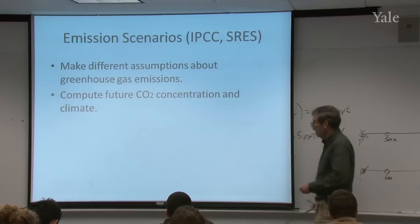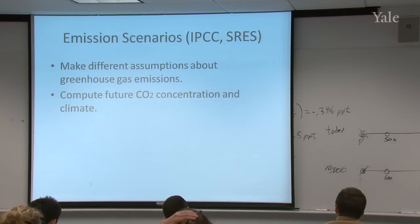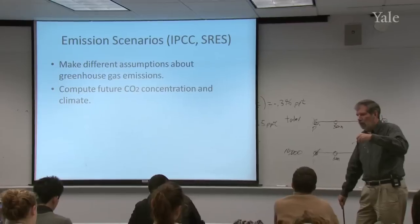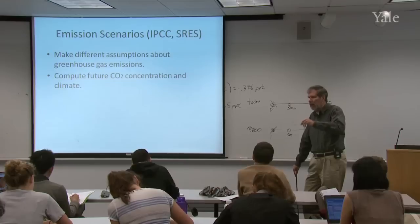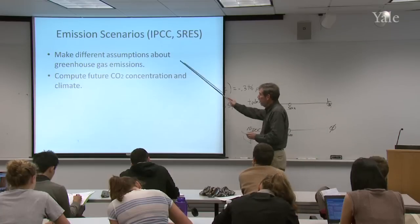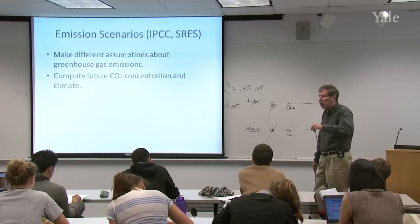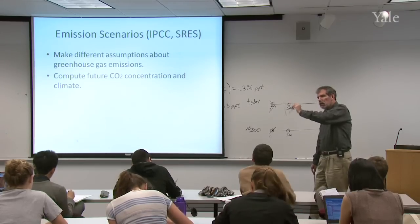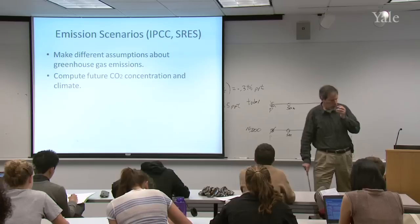The idea here is that some economists and industrial engineers got together to imagine how the emissions of carbon dioxide in the atmosphere might proceed over the next hundred years based on certain population and economic assumptions. They tried quite a variety of different things. For each of those, they handed those off to the climate modelers. The climate modelers ran their climate models with these different carbon dioxide concentrations. The result is a set of projections into the future of how both CO2 and Earth climate will change.